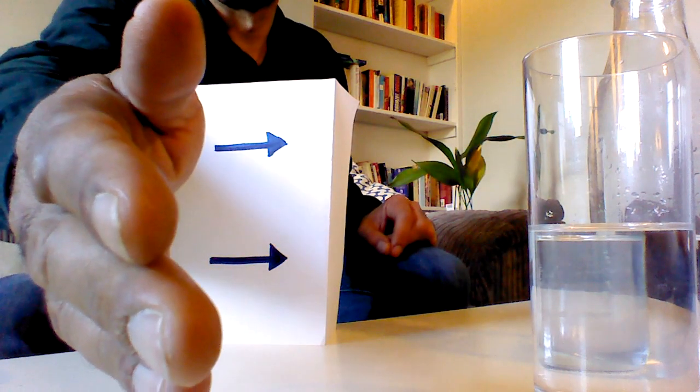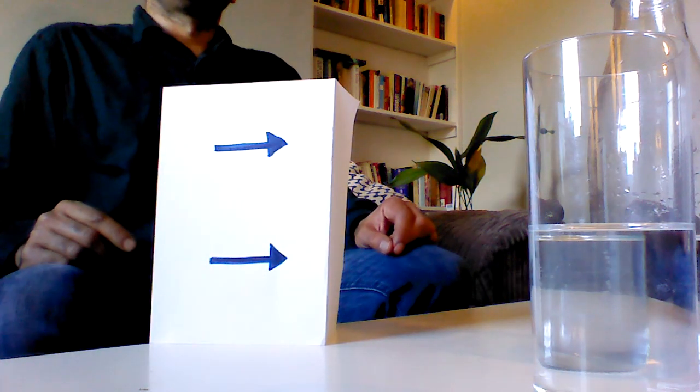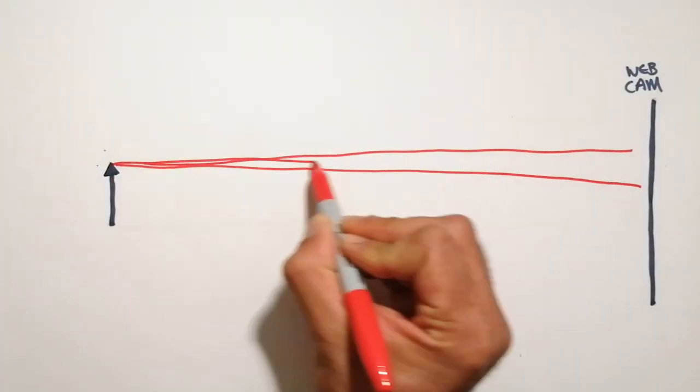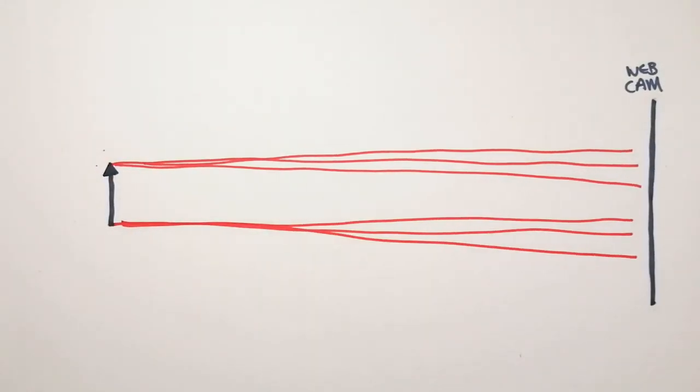Without water in the way we see the arrow as it is. This is because light spreads out in all directions and some of it will travel in a straight line to the webcam over here.